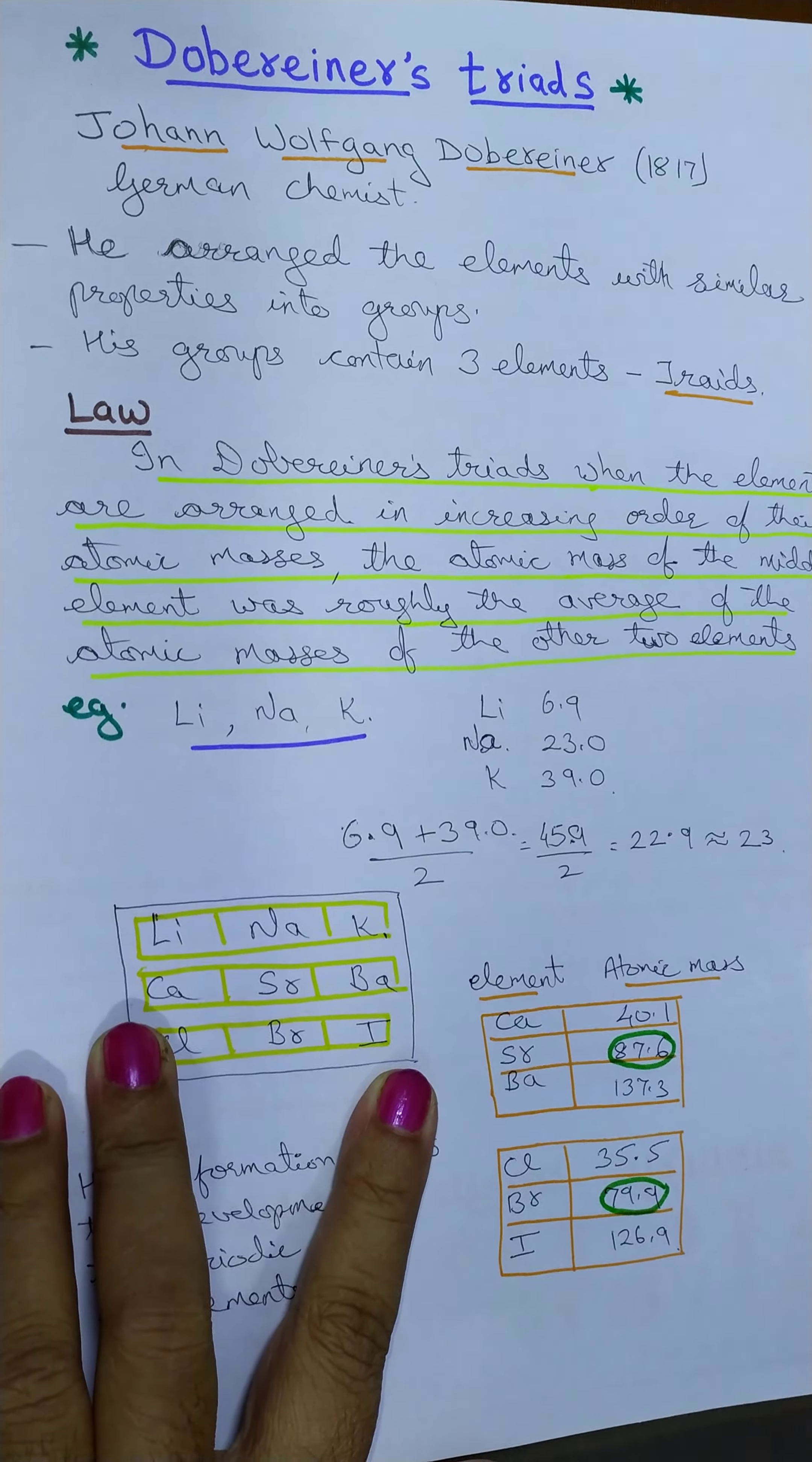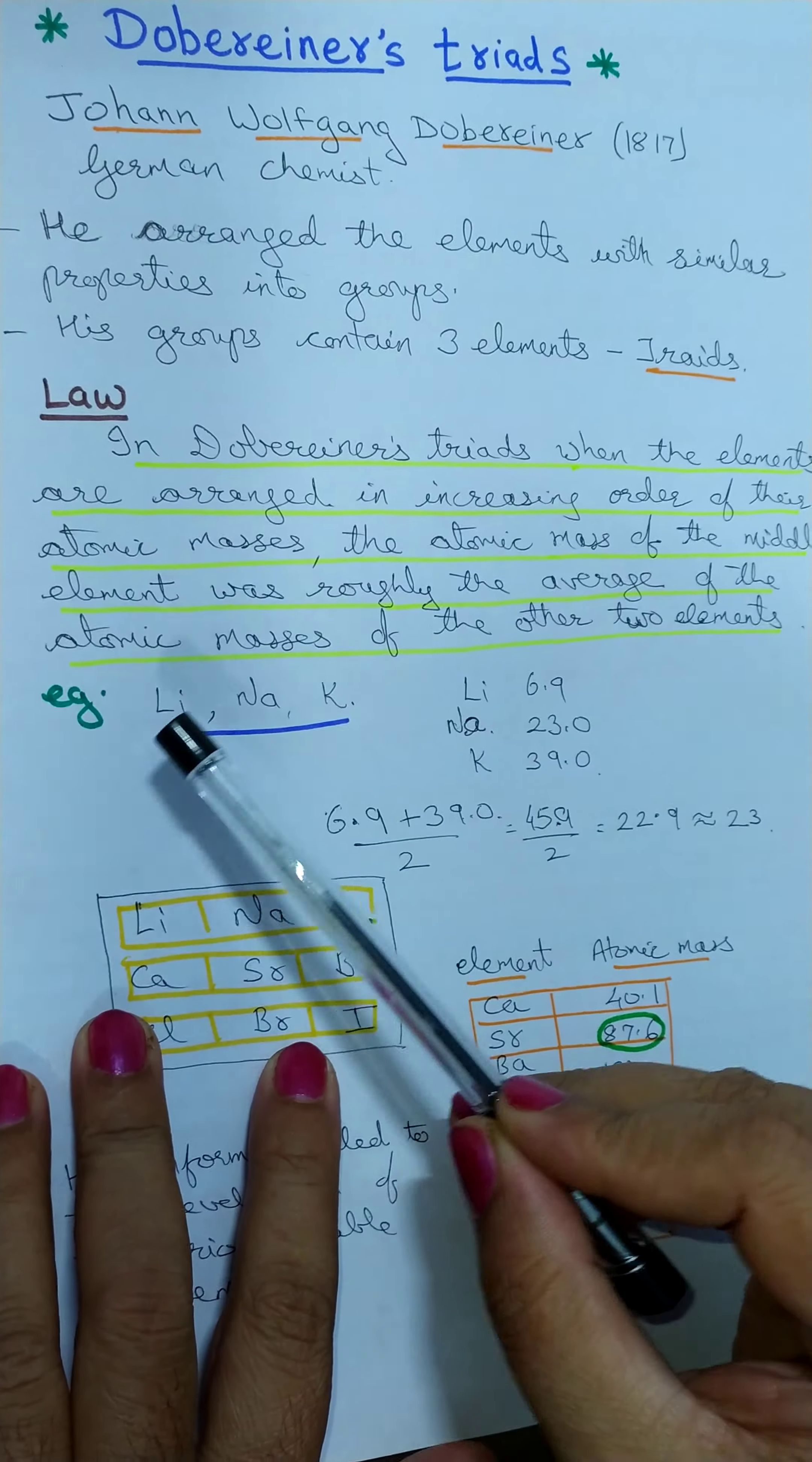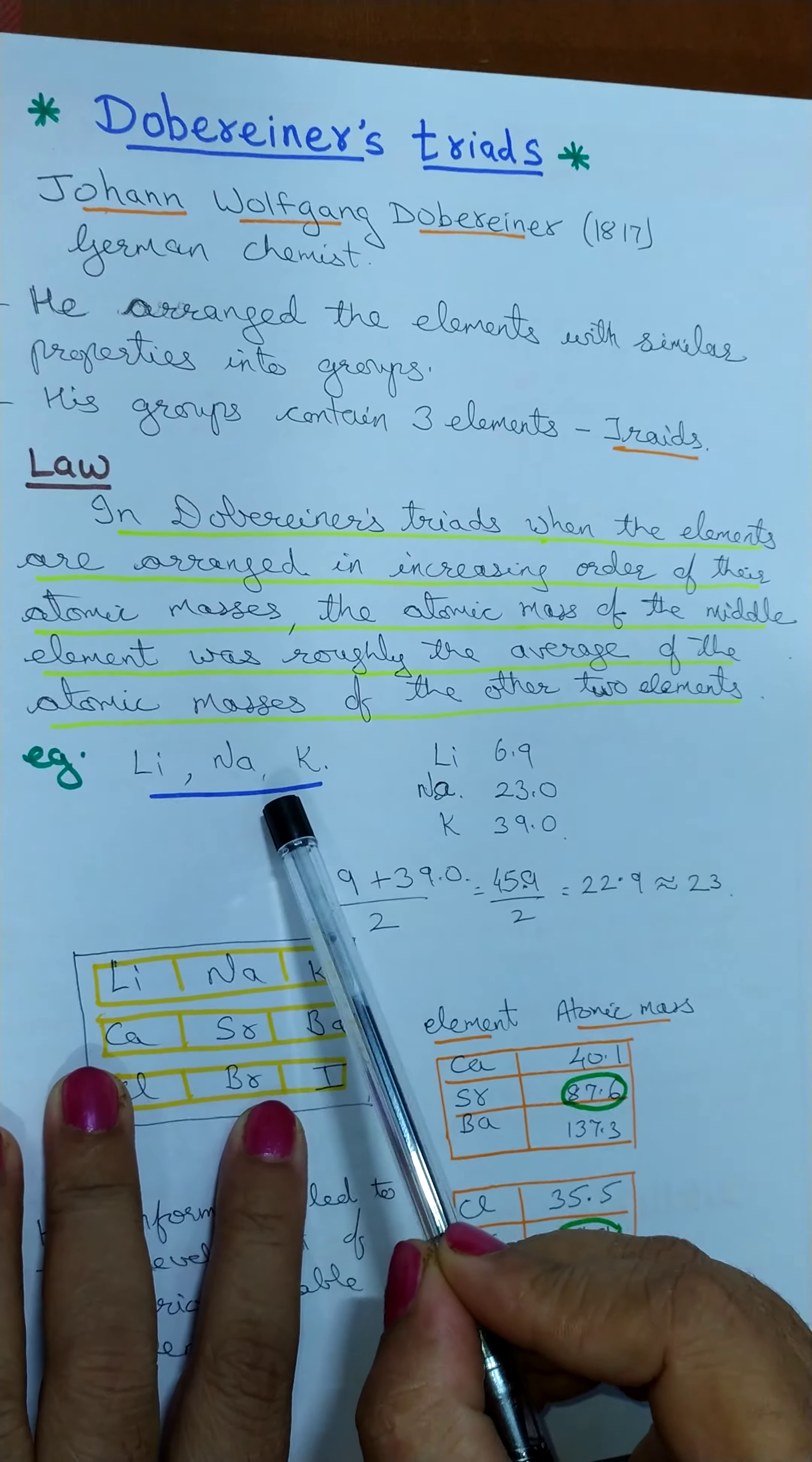according to his law, you find that the atomic mass of the middle element, that is sodium at 23.0, is the arithmetic mean of the other two, lithium and potassium. So, atomic mass of sodium is the arithmetic mean of lithium and potassium in this case.